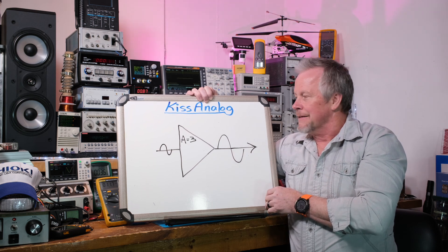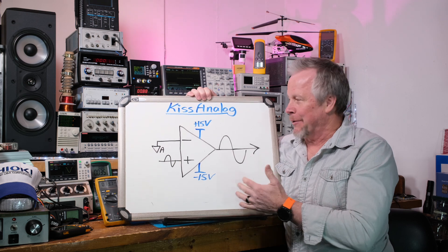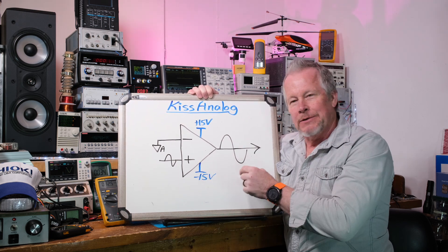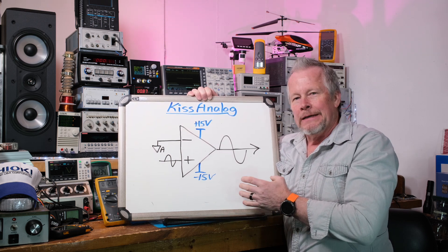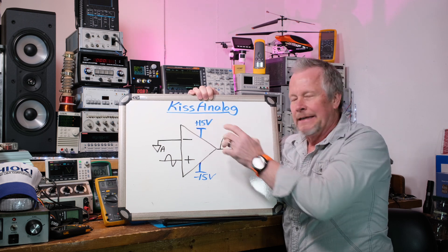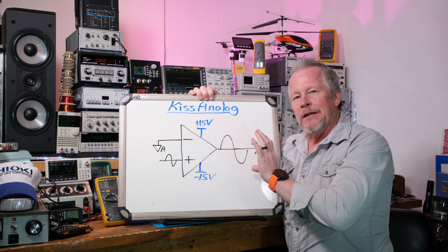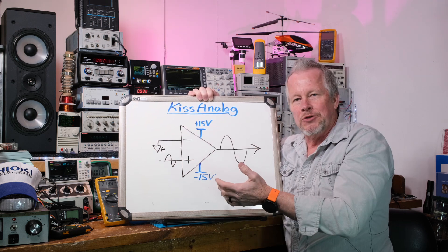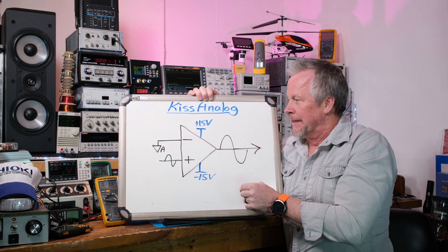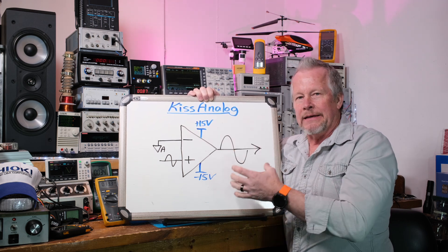Now we're back and I've got the voltage rails drawn on here. I also show them with little bar symbols — that's a global signal. When you have a signal like that on your schematic, you're not showing all those wiring lines for the power traces, but the bars show they're connected to something with the same label. The bar that says plus 15 volts is connected to everything else labeled plus 15 volts, and when you're using software it ties all those things together globally around your schematic.